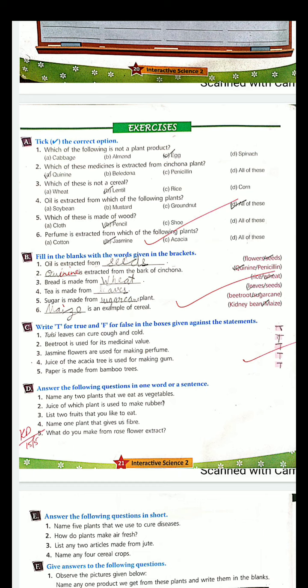Now next, write true and false - F for false and T for true. You will do fill in the blanks and true and false in the copy. Whichever copy you are doing the work in, in which you have done the last time work, you will continue the work in this. Only fill in the blanks and true and false. Tick the correct option you can read from the book and understand and learn.